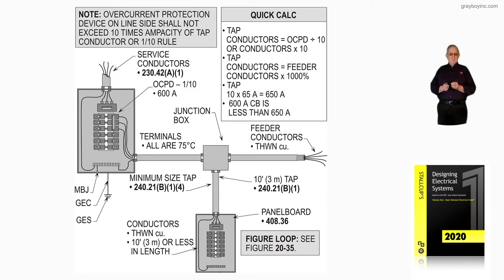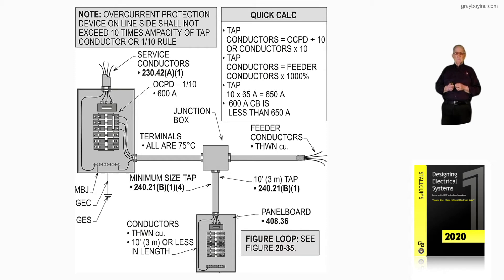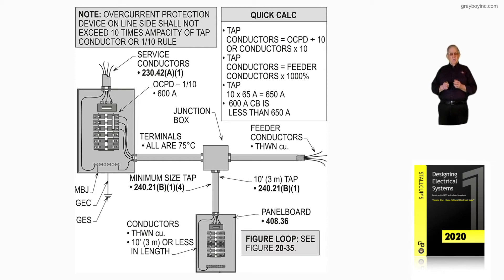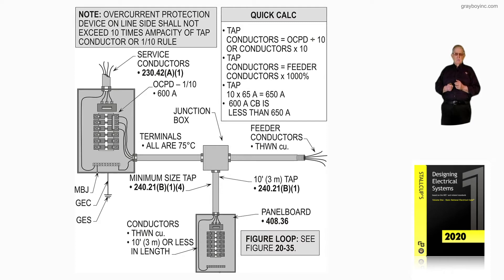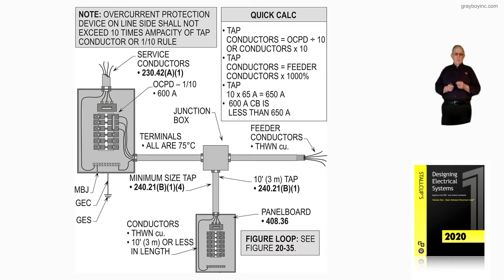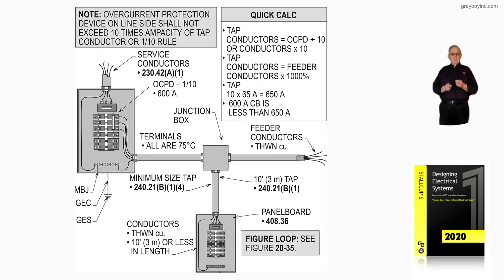You're not limited in size there. Under certain conditions, you could have a number 12, number 10, number 8 — just as long as you supply the load, but you need to review that. If you're tapping from larger conductors with smaller conductors as you see in the illustration, you have a 600-amp main there, and that main determines the size of the tap to that panelboard that you see. That's 240.21B.